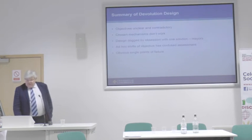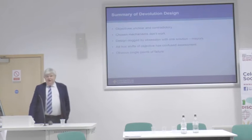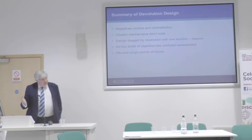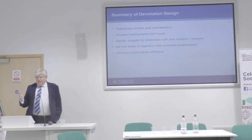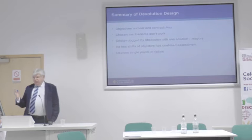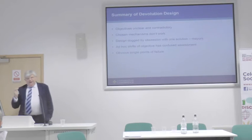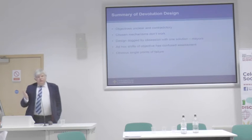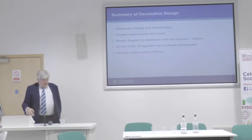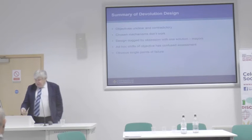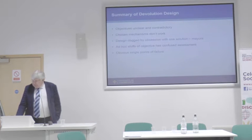So if you apply that to the devolution proposals we've been talking about all day, what do you get? Well, this is what I think you get. You've got unclear and contradictory objectives. The chosen mechanisms — at least one of them, in fact none of them — work. The design is obsessed with one solution. There have been ad hoc shifts in objectives which confuse the whole project and confuse assessment of whether the solutions are good ones. And there are two obvious single points of failure in the design. So just briefly, I want to go through all five of those.